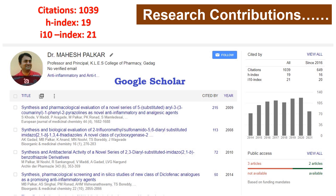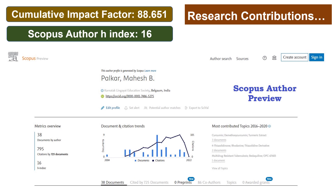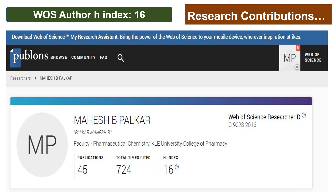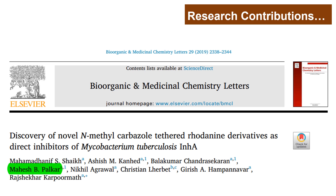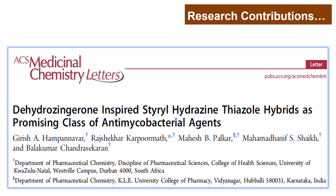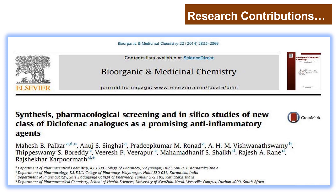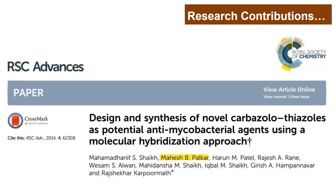Dr. Mahesh Palkar has published his research findings in various national and international reputed peer-reviewed journals, with 1,039 citations and an H-index of 19. He has guided post-graduates and PhD scholars for their successful completion of research projects, and has a cumulative impact factor of 88.651 for his publications. Most of his research findings are published in WOS journals, including Elsevier's Bioorganic and Medicinal Chemistry Letters, ACS Medicinal Chemistry Letters, and the Journal of the Royal Society of Chemistry.